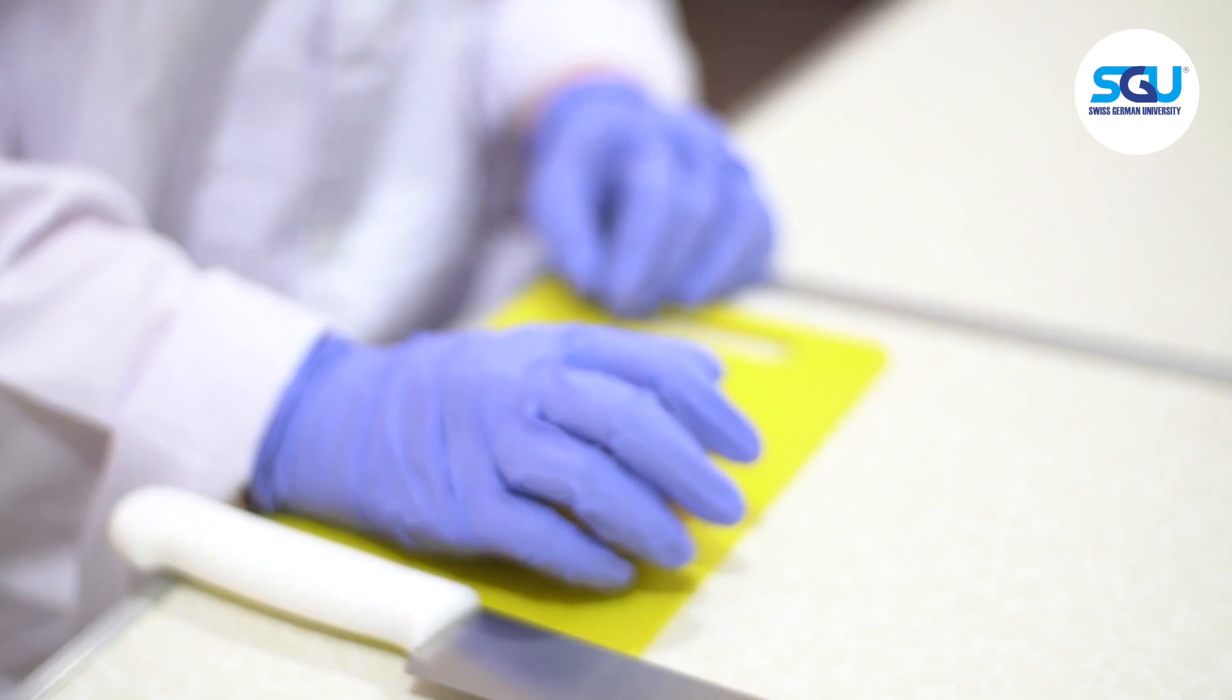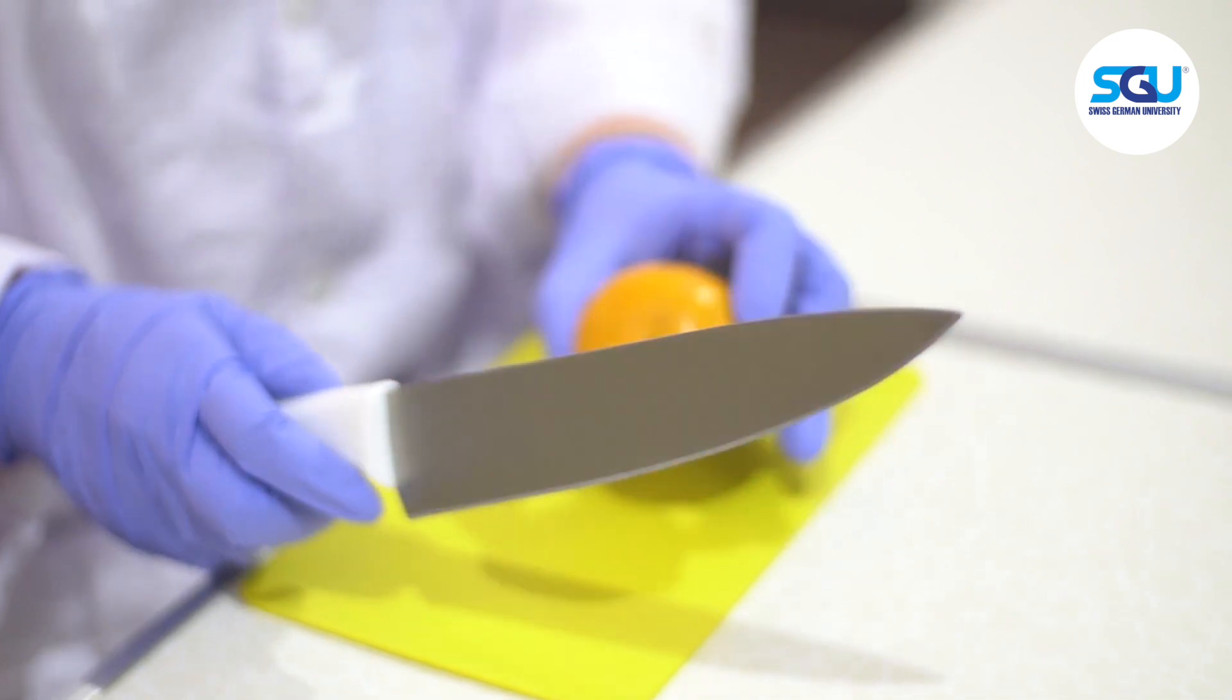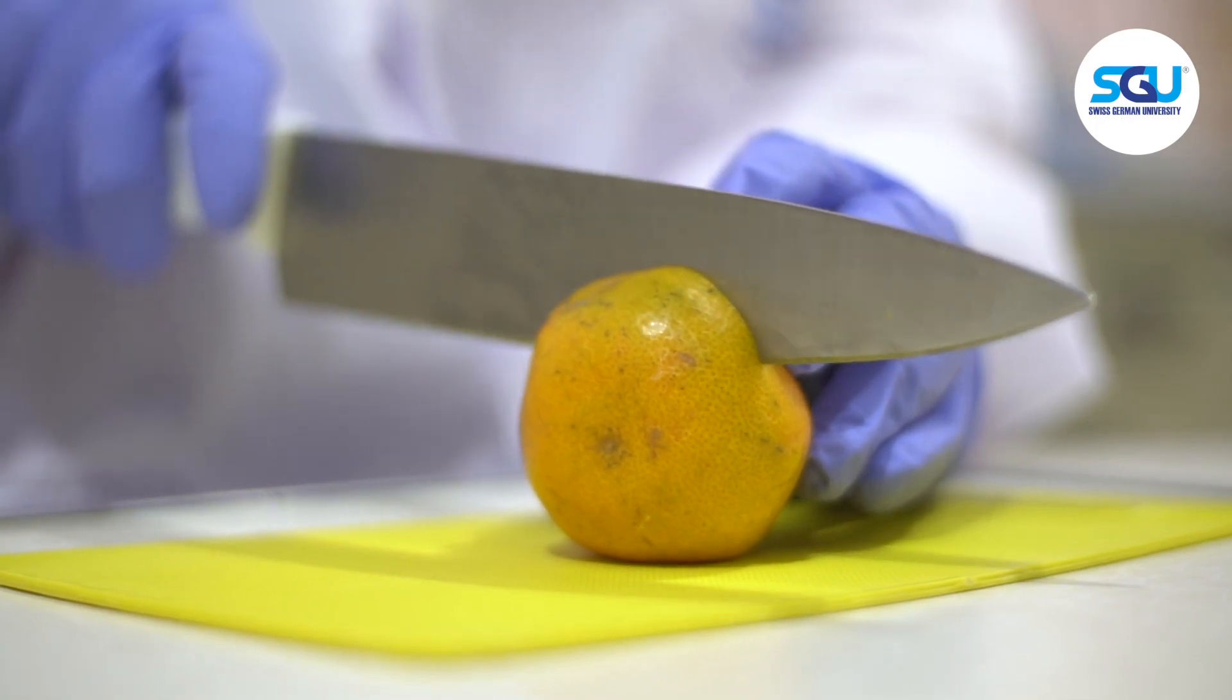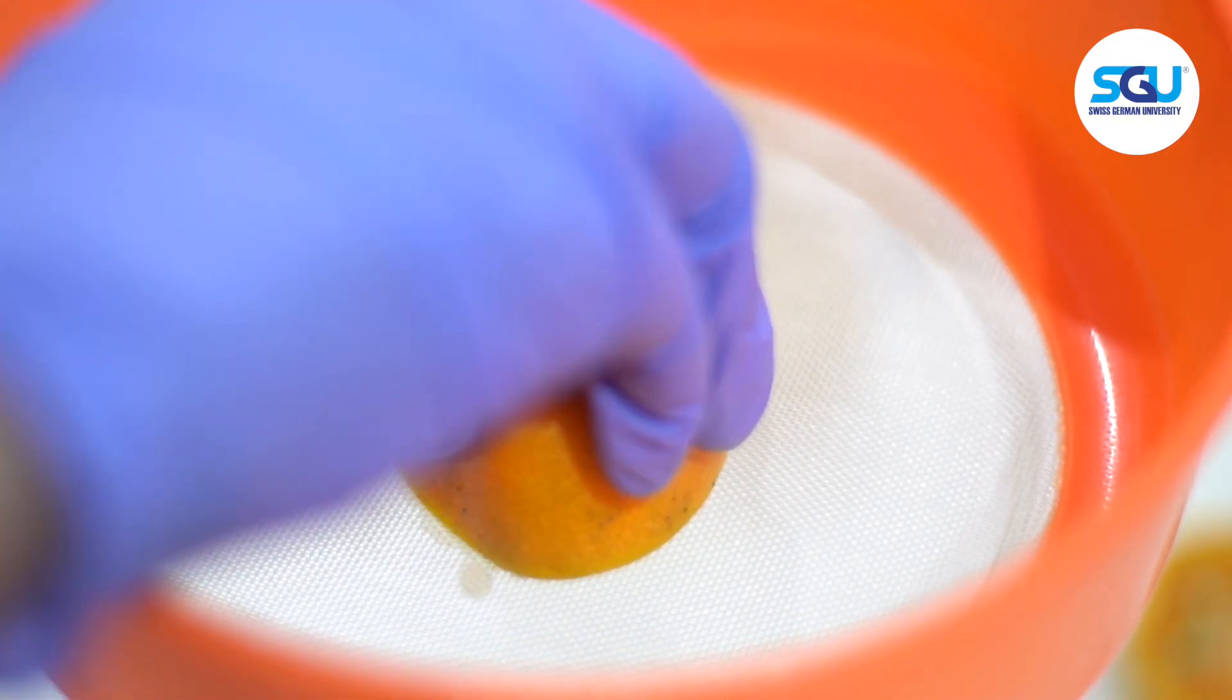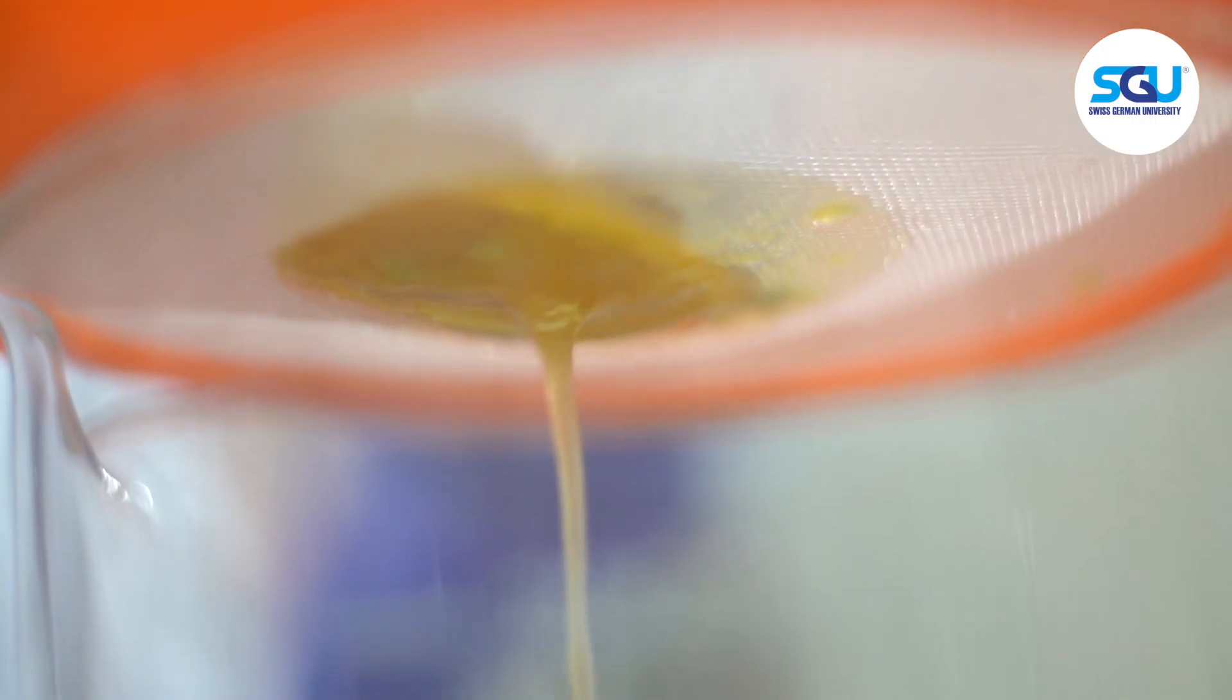To start the experiment, the orange fruit is prepared. After cutting the orange, the juice was extracted by squeezing an orange into a filter to separate the juice from its pulp.